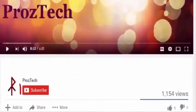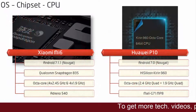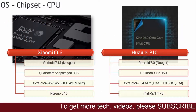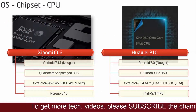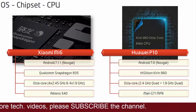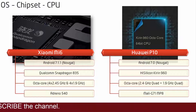Friends, you are watching Prostec. So let's get started. Starting with the Xiaomi Mi 6 device, it works on Android 7.1.1 Nougat and is powered by an octa-core 2.45 GHz processor with Qualcomm Snapdragon 835 and GPU Adreno 540.